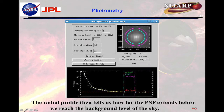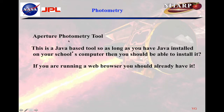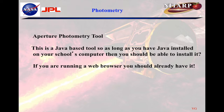So that's basically photometry, and that's why the Aperture Photometry Tool was developed. It's a Java-based tool, and so long as you have Java installed on your school's or your own computer, you should be able to run APT. If you're running a web browser, usually you have Java. This tool gives you a lot more capabilities to measure the light of the PSF. That's the tutorial that Russ Lair has put together, and I encourage you to go and get the details on how to use APT. Thanks a lot for listening.